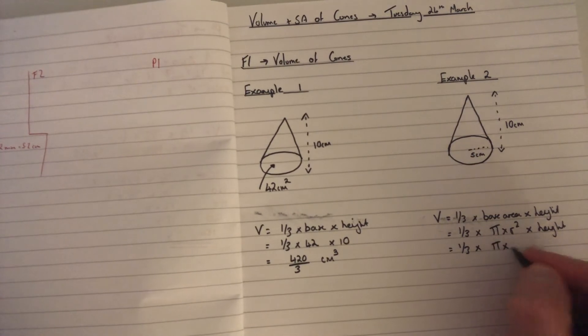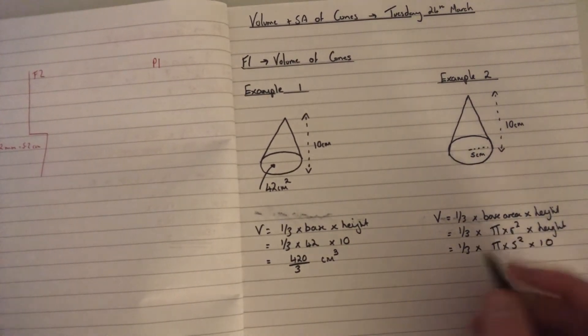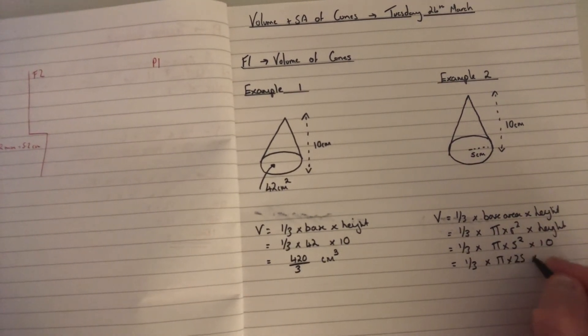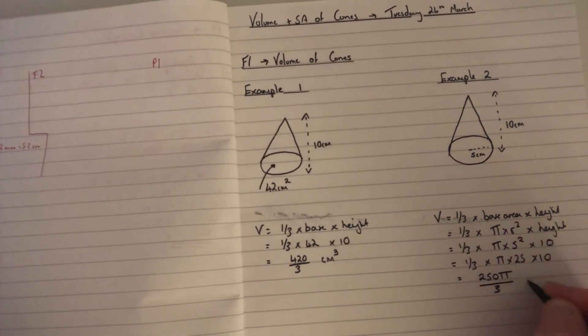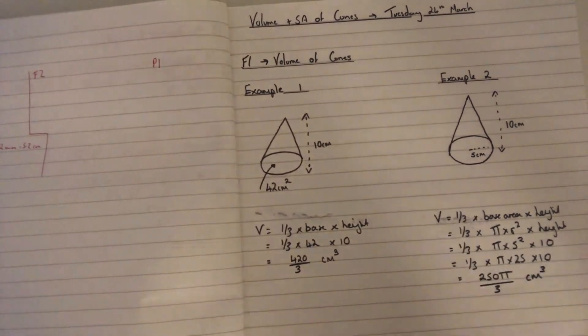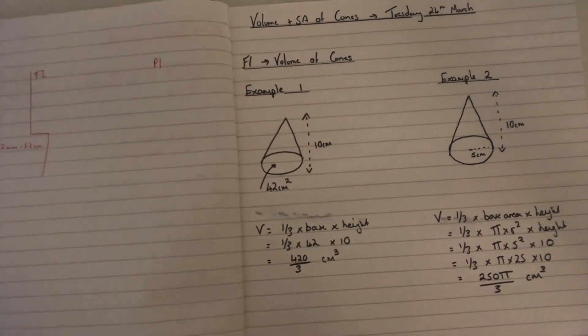That would give us a third times by pi times by 25 times by 10, which gives us 250 pi divided by 3 centimeters cubed. Again, sticking the calculator around to a sensible degree of accuracy.